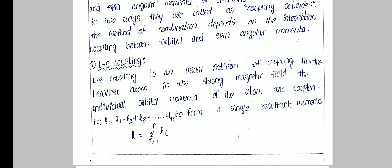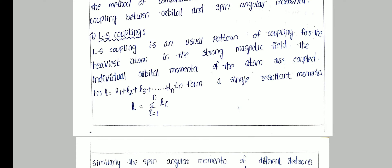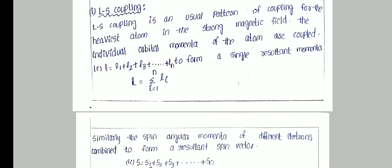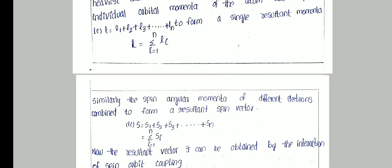The total orbital angular momentum of an atom is L = L1 + L2 + L3 + ... + Ln. So L equals sigma from i=1 to n of Li. Similarly, the spin angular momentum of different electrons combine to form a resultant spin vector, with individual spin values S1, S2, etc.